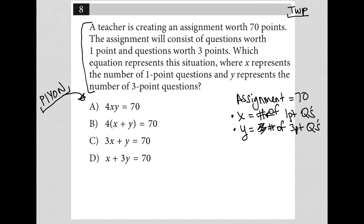So if I'm trying to have all that add up to 70 points, then it looks like choice D is going to be the correct answer.